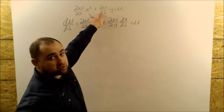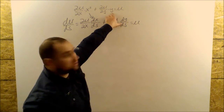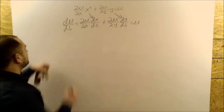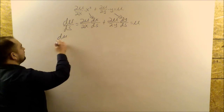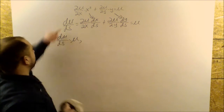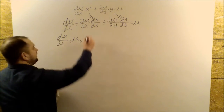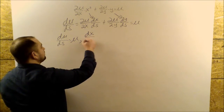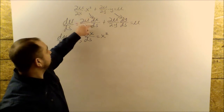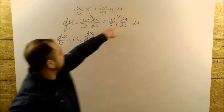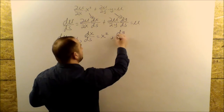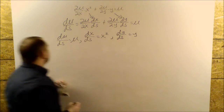Likewise, we have ∂u/∂y and ∂u/∂y, so these coefficients have to be equal. So we have three equations here: du/ds = u, dx/ds = x², and dy/ds = y.